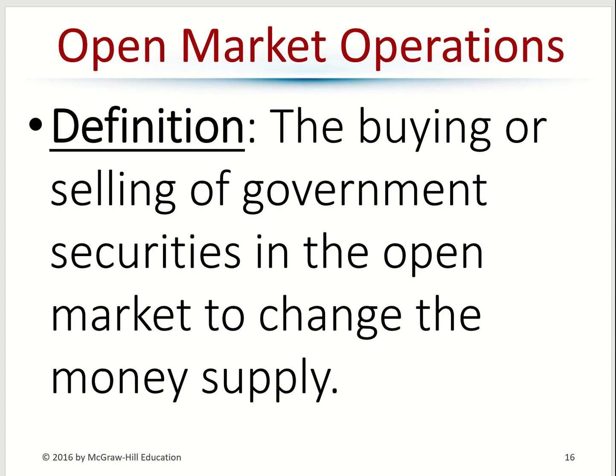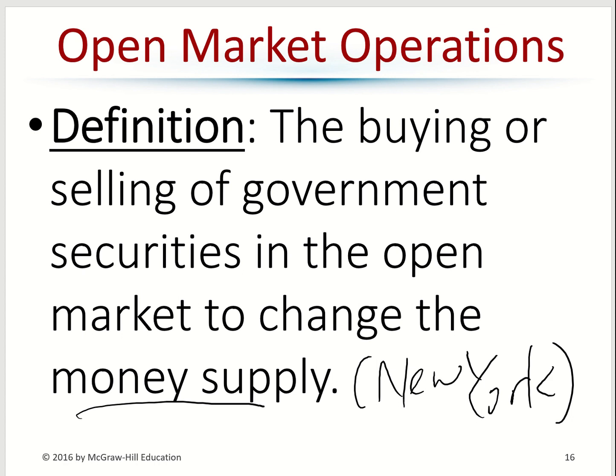Open market operations is the buying and selling of government securities in the open market to change the money supply. This is done at the New York Federal Reserve Bank, where there's a trading desk. Companies and investors can buy and sell government bonds directly from the Federal Reserve. When the Fed buys bonds, it gives cash to banks; when it sells bonds, it takes cash away from banks.